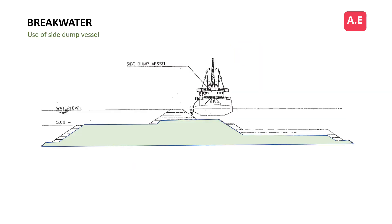Side bunds of core material on both sides of the breakwater core will be constructed by side dump vessel. These bunds will be built to a height of approximately 3 to 4 meters. Core material will then be dumped by split barges between the bunds up to the top of the bunds. This process is repeated until the placed core has reached a level of approximately 4 meters chart datum. Further core material above this level will be placed with the side dump vessel.